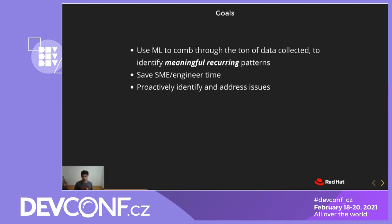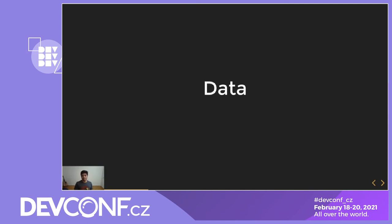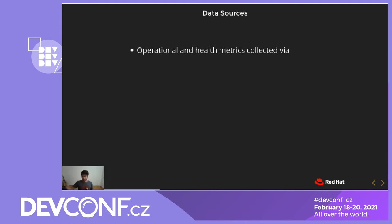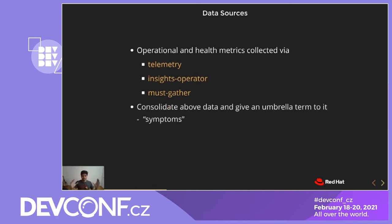In any data science project, the first part is obviously the data. In this analysis, the data that we used was operational and health metrics, which were collected from customers' clusters using services like telemetry, insights, and must gather. These are services that Red Hat provides, and you can opt into them. They collect information like how many nodes are in a cluster, how much memory you have, how many CPU cores, et cetera. Internally at Red Hat, we have a CCX team that works together with the data hub team and consolidates data coming from all of these different sources into one place, giving one umbrella term to each piece of data. That umbrella term is symptom.